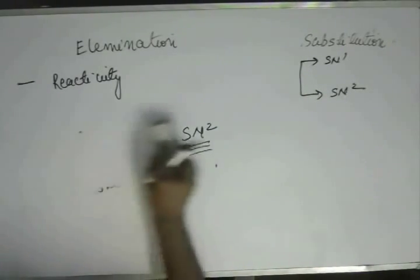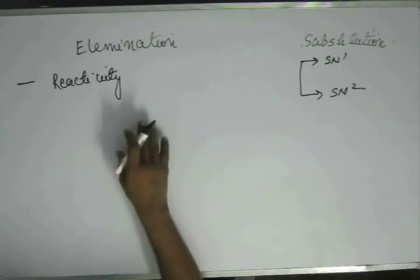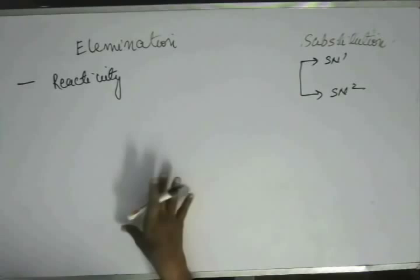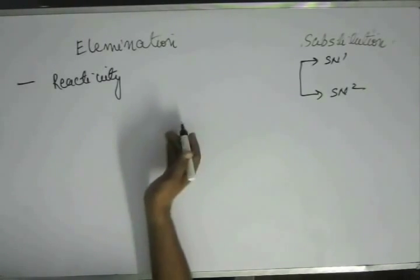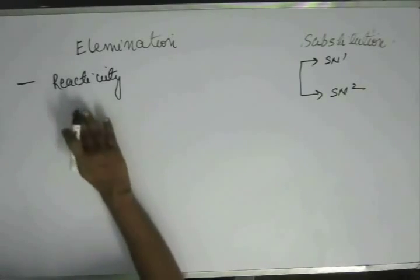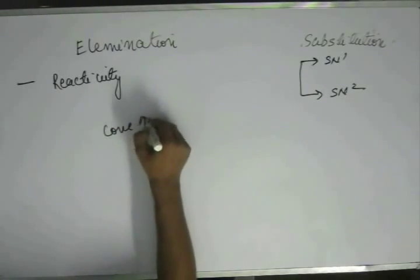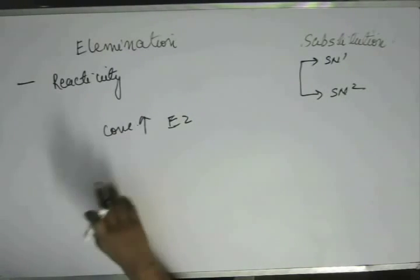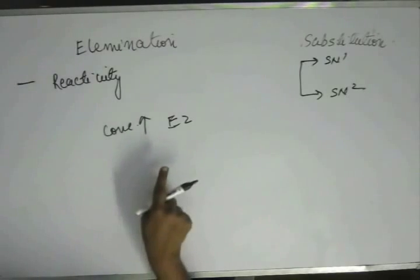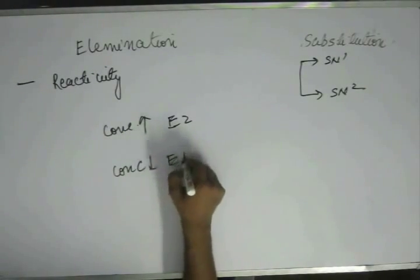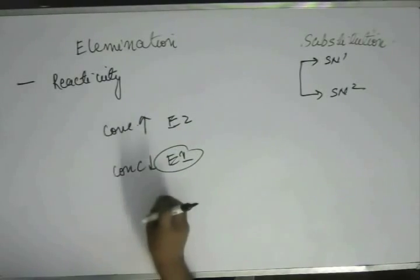Similarly, if we control reactivity in such a way that elimination is favored — meaning we have increased the reactivity — going on the same ground as substitution, again by controlling reactivity, if we have already favored elimination, then if you increase the concentration, E2 will be favored, as the base will be present in E2. So if you increase concentration, E2 reaction will be favored and will have a higher rate of reaction. If you decrease concentration, E1 will be favored. So reactivity and the concentration of the reagent are key factors.